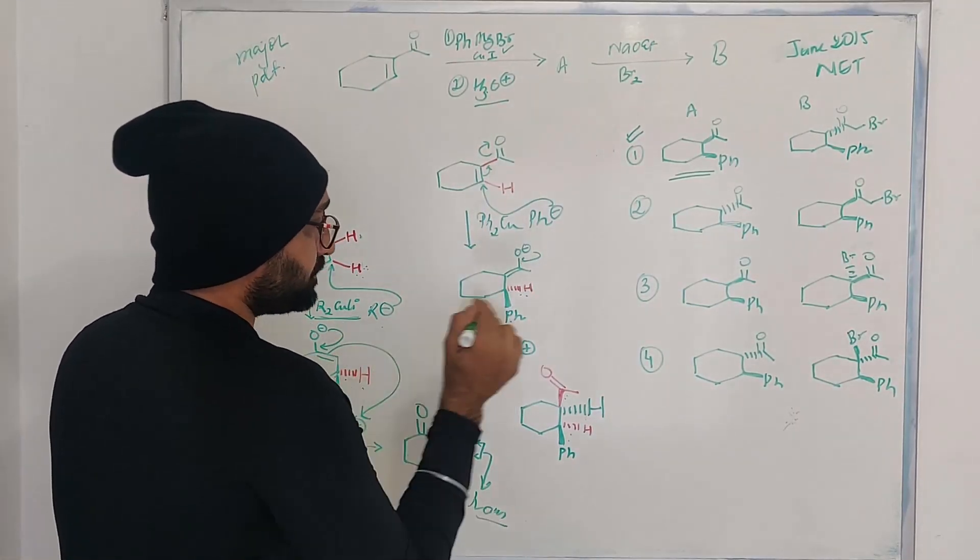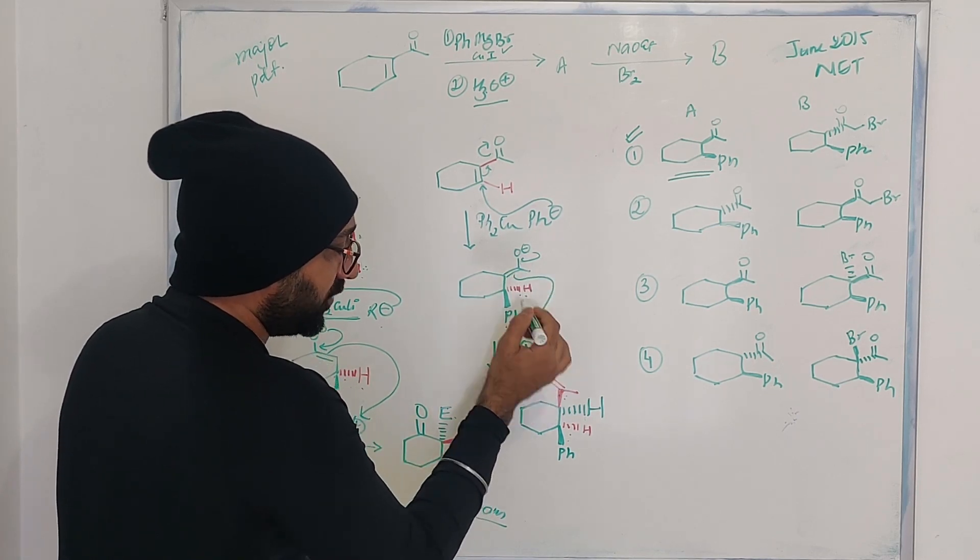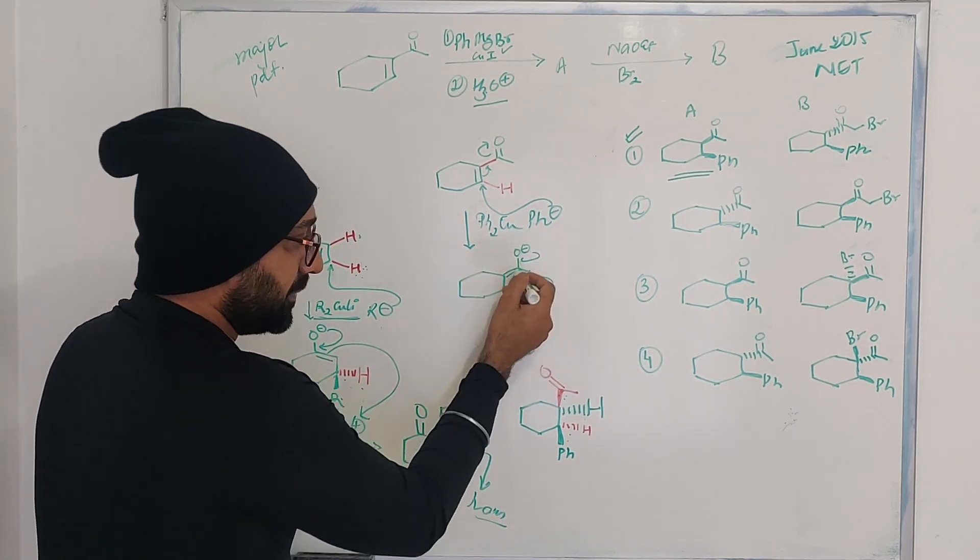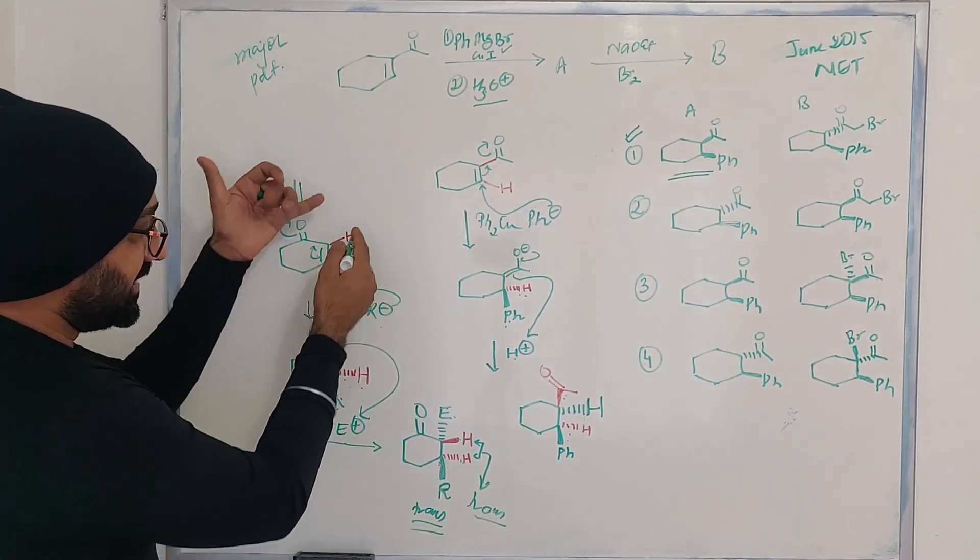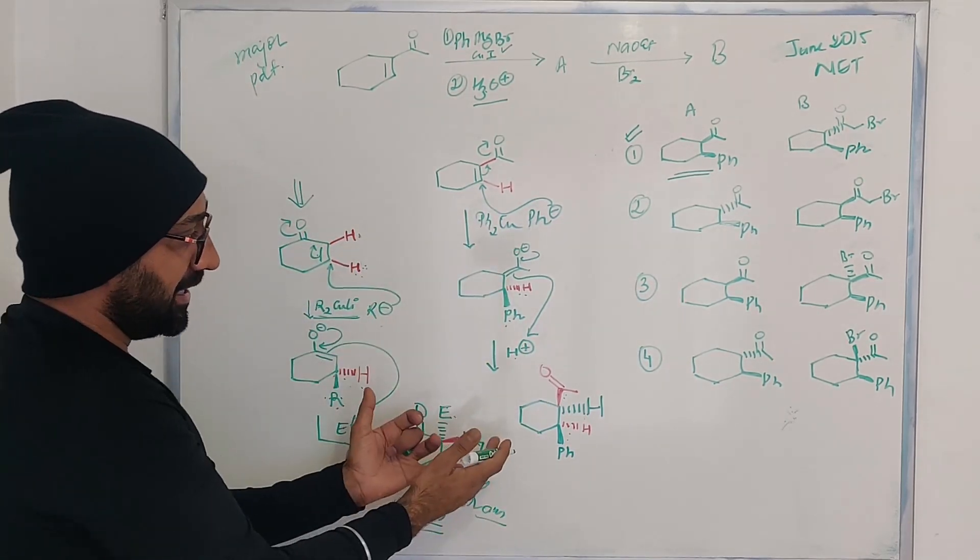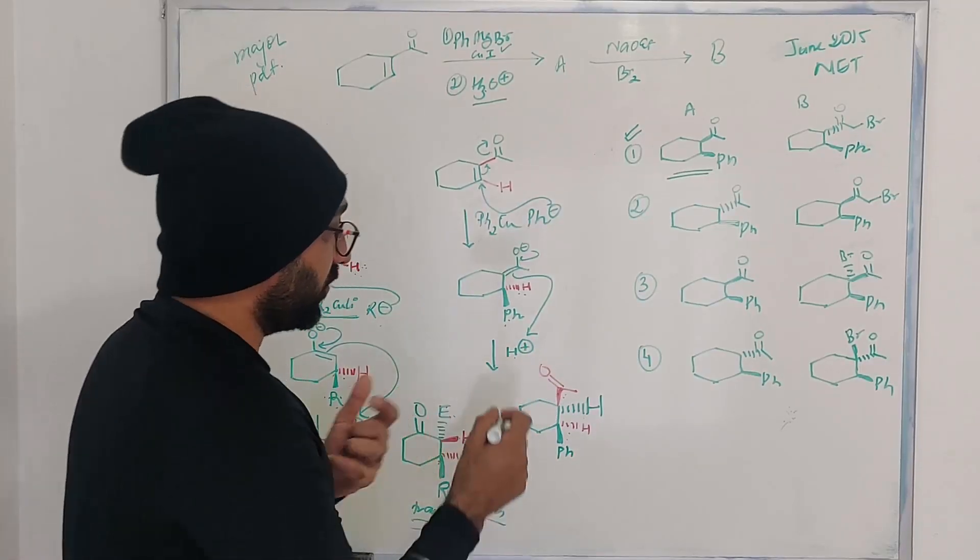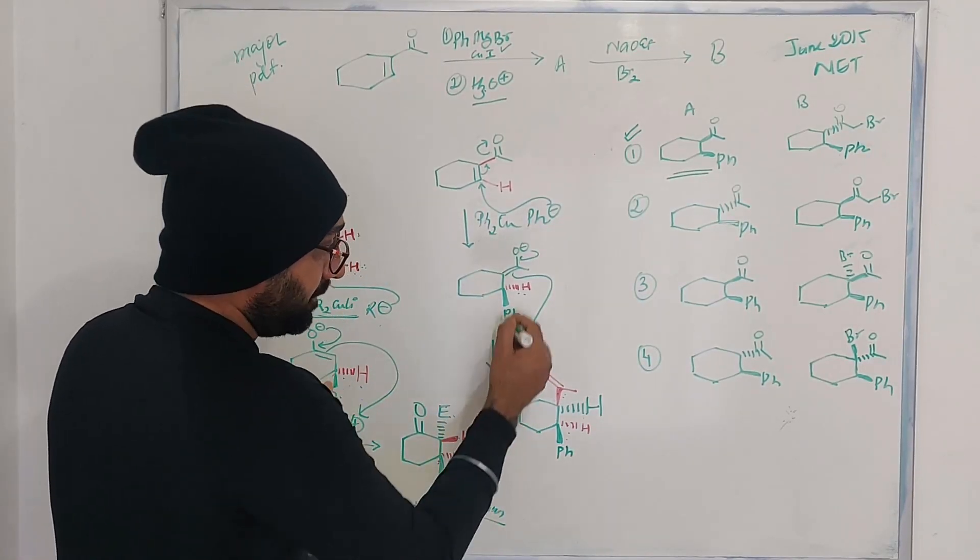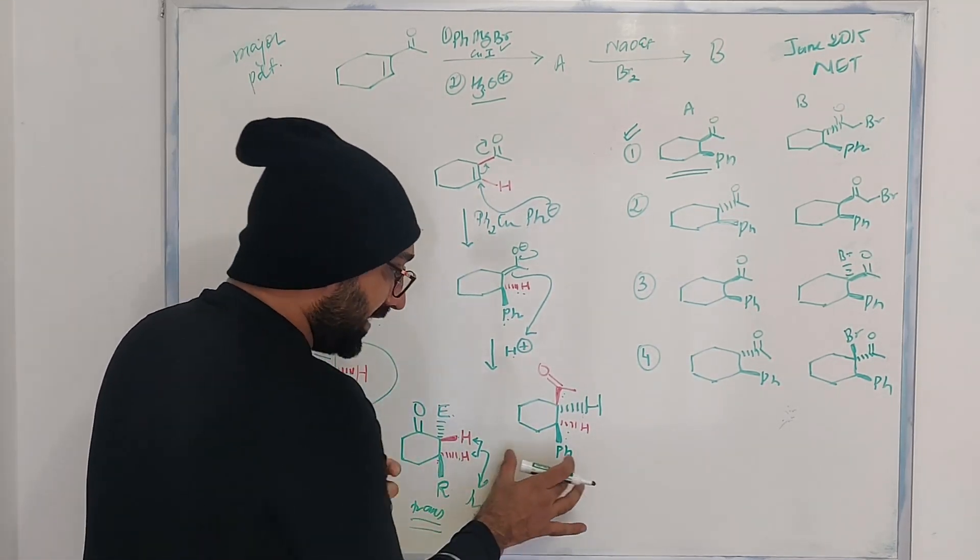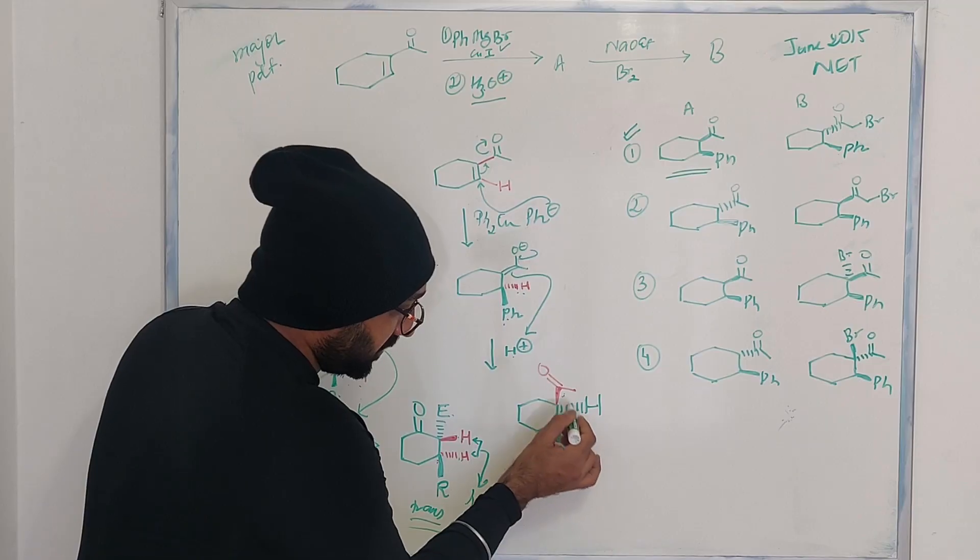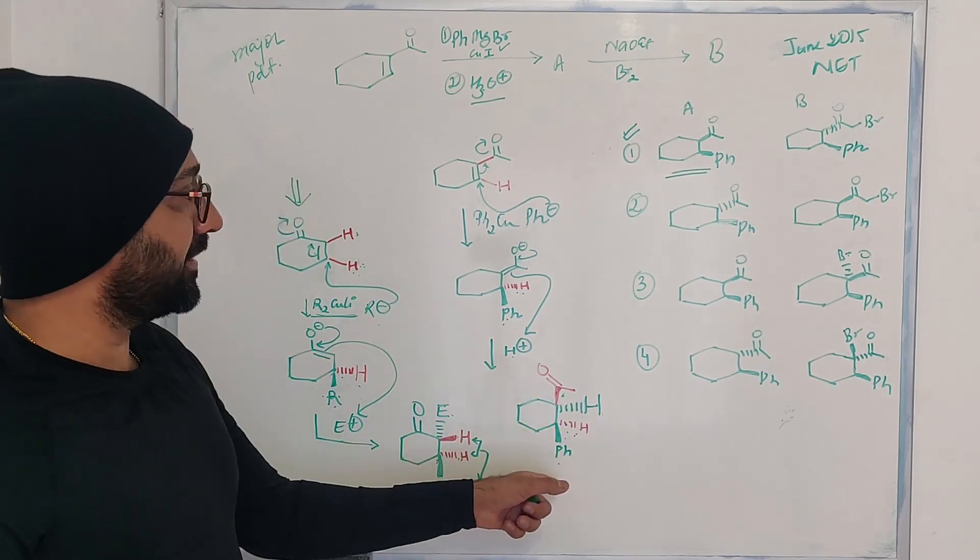So basically what we are using is phenyl magnesium bromide and copper iodide, so what we are generating is a diphenyl cuprate. So the actual nucleophile is phenyl carbanion. Phenyl is coming from top face, so phenyl of the top face, hydrogen is going behind the plane. When this enolate is coming back, in the second step we are quenching it with acidic water. It is going to pick up the hydrogen proton from behind the plane.